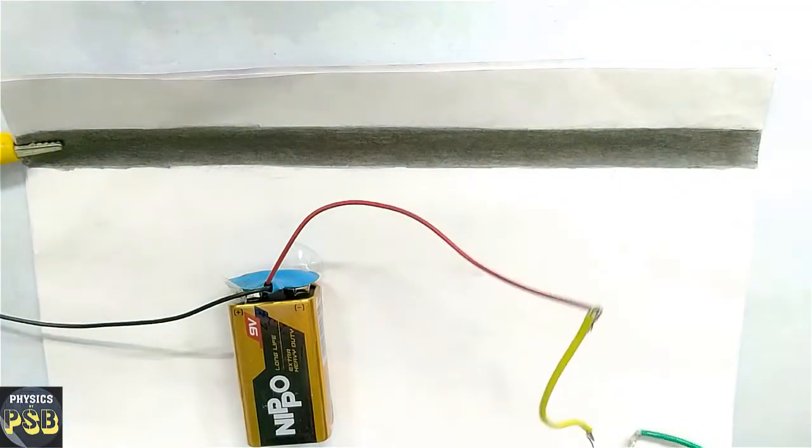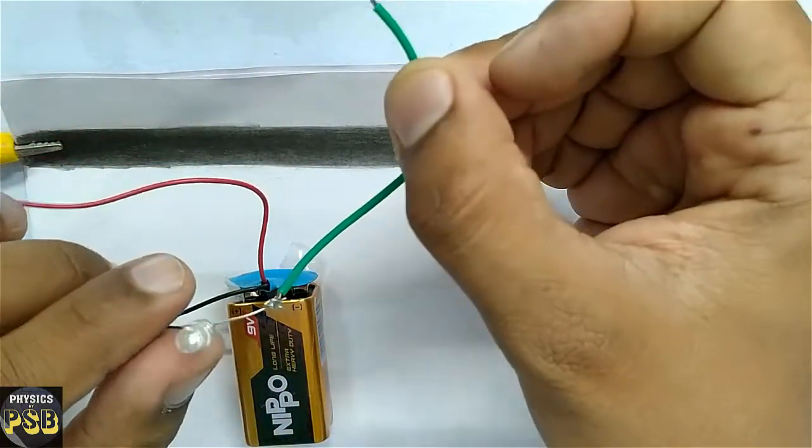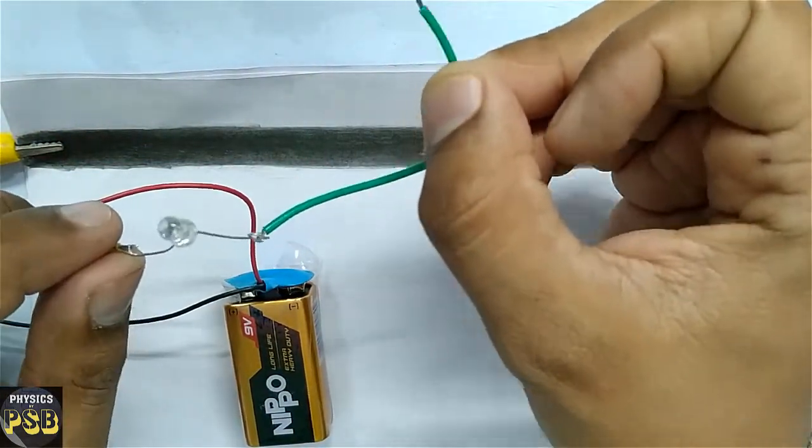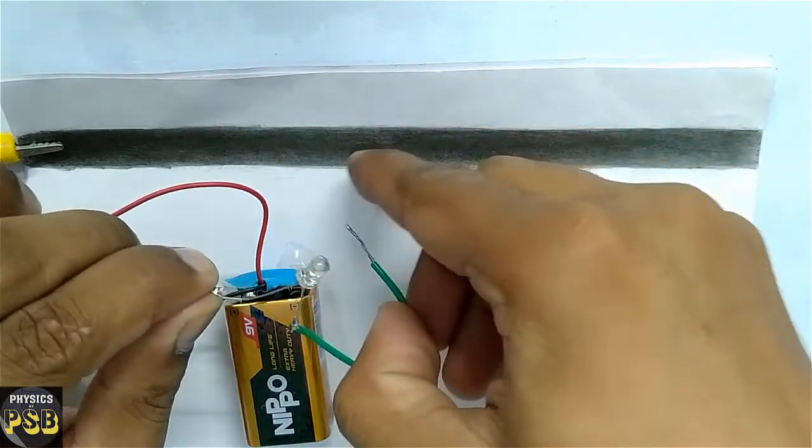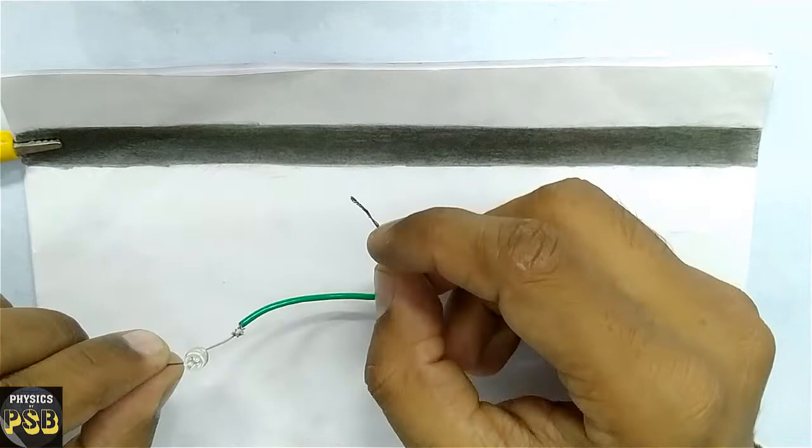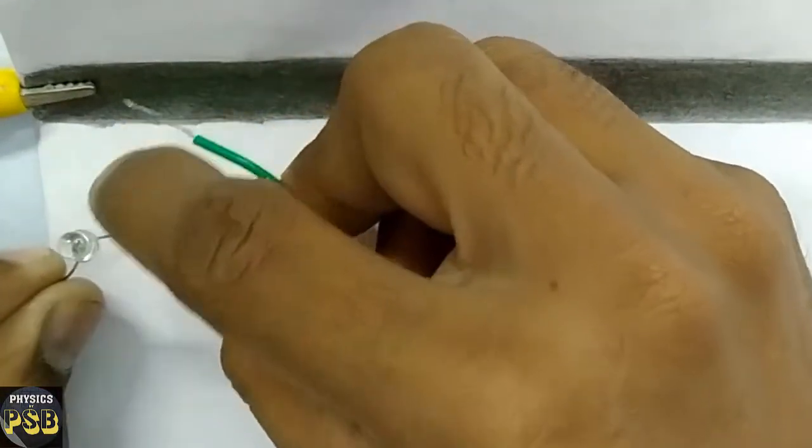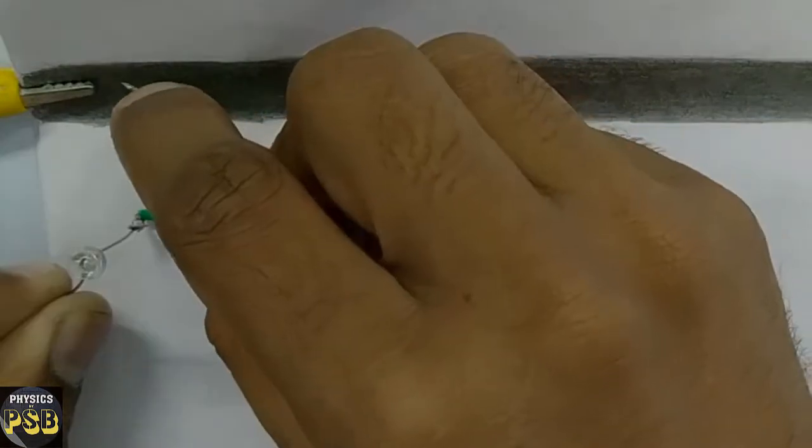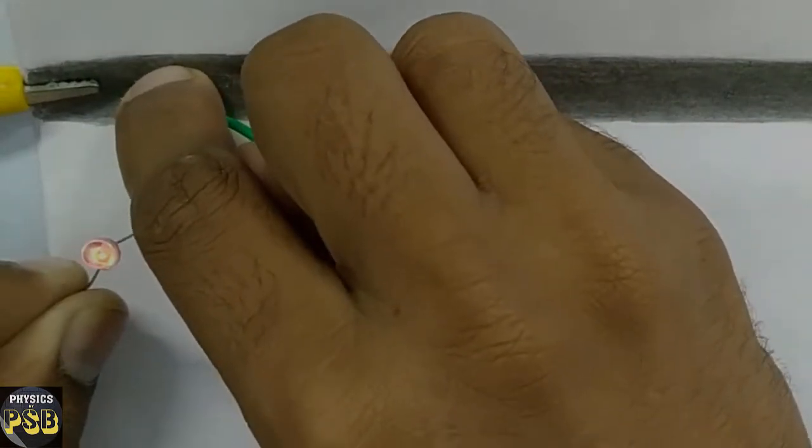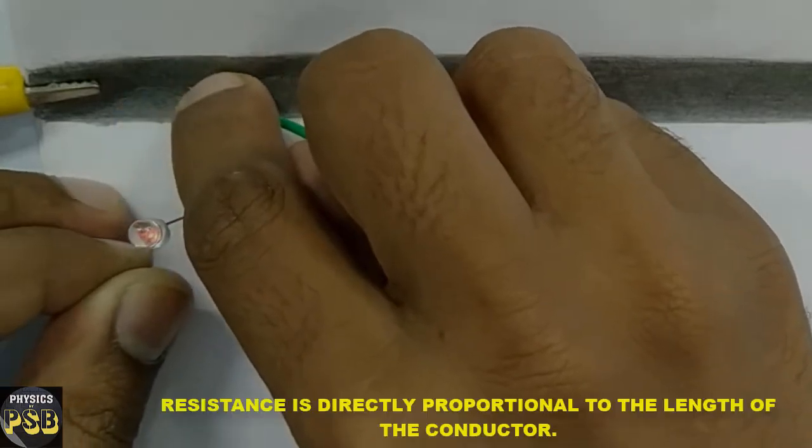Now I touch the cathode of this LED to the track. Look at the LED when I do so. You can observe the LED glow. When I move this away, you can observe the brightness decreases.